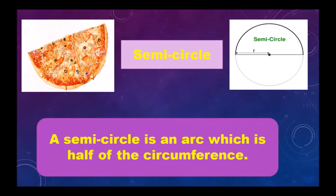Semi-circle: a semi-circle is an arc which is half of the circumference. This half circle is known as a semi-circle.